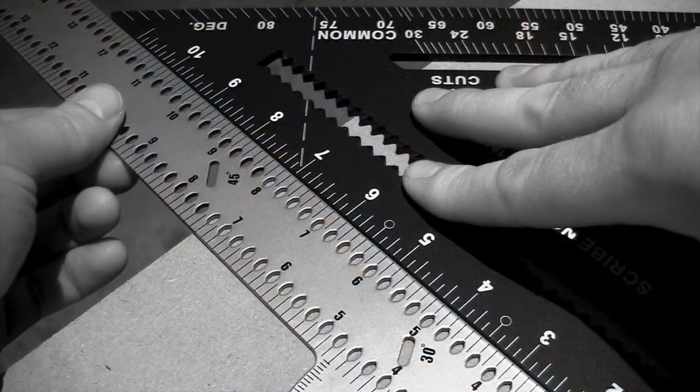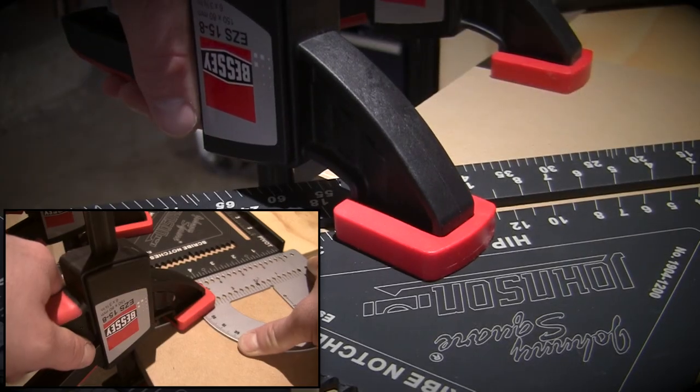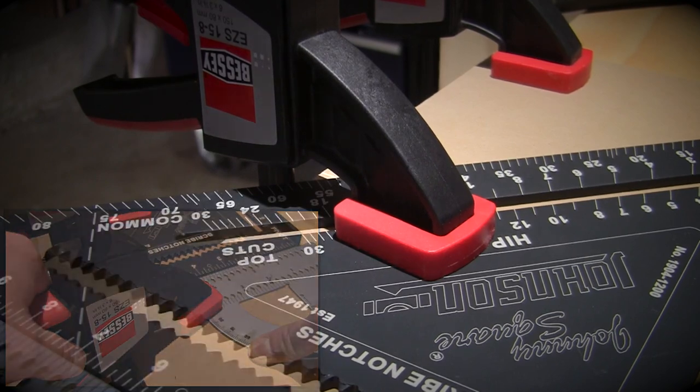There's absolutely no play with the framing square sitting against the Johnny square, so I clamped the Johnny square down first, and then the framing square. Now, it's time for the good stuff.